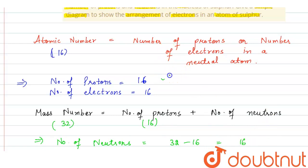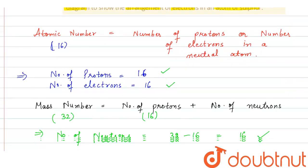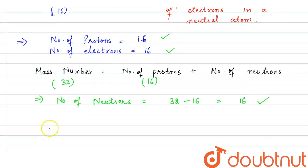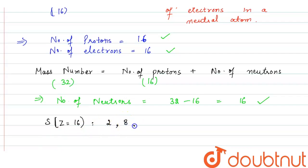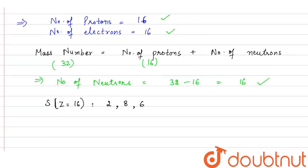So the number of protons is 16, the number of electrons is 16, and the number of neutrons is also 16. Now, sulfur has atomic number 16 and it has 16 electrons, so there will be 2 electrons in the first shell, then 8 electrons in the second shell, and then 6 electrons in the third shell.